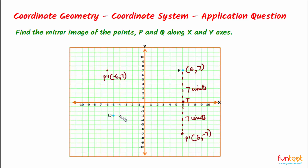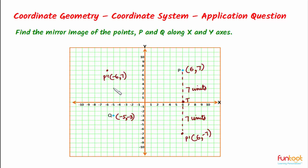Now let's take point Q. The coordinates of point Q are (−5, −3). First, let's find its mirror image along the X axis. The X coordinate remains the same as −5, and the Y coordinate becomes the negative of itself — the negative of −3 is +3. So the coordinates of the image along the X axis will be (−5, 3). This point we can call Q′ with coordinates (−5, 3), which is the mirror image of Q along the X axis.